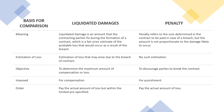Regarding estimation of loss, in liquidated damages there is an estimation of loss that may arise due to the breach of a contract, while in penalty there is no such estimation. The objective of liquidated damages is to determine the maximum amount of compensation, whereas the objective of penalty is to discourage parties from breaking the contract. Liquidated damages are imposed for compensation, while penalty is imposed for punishment.